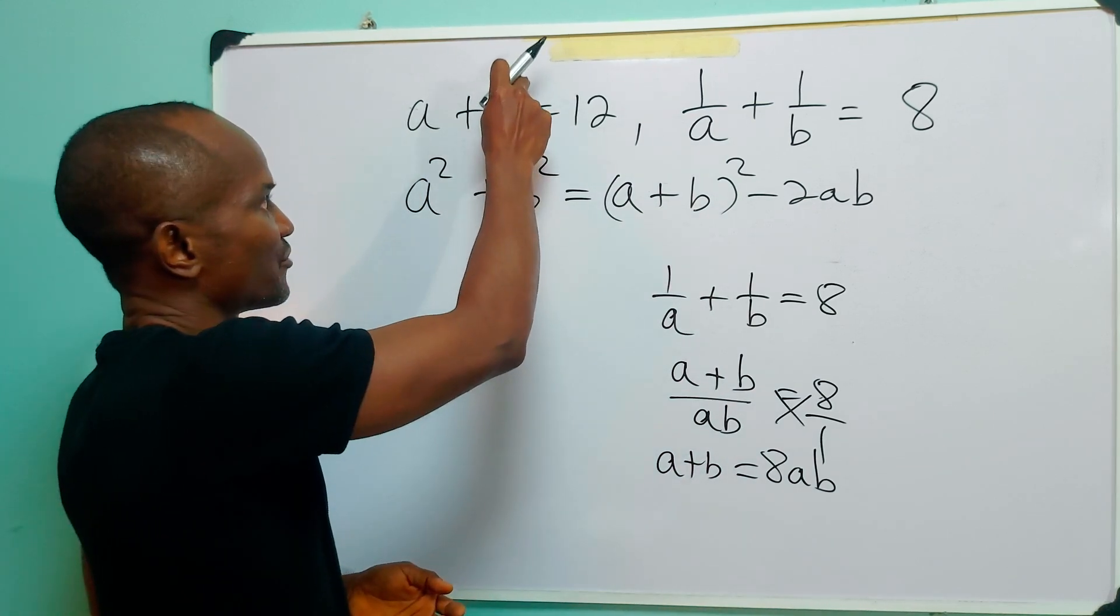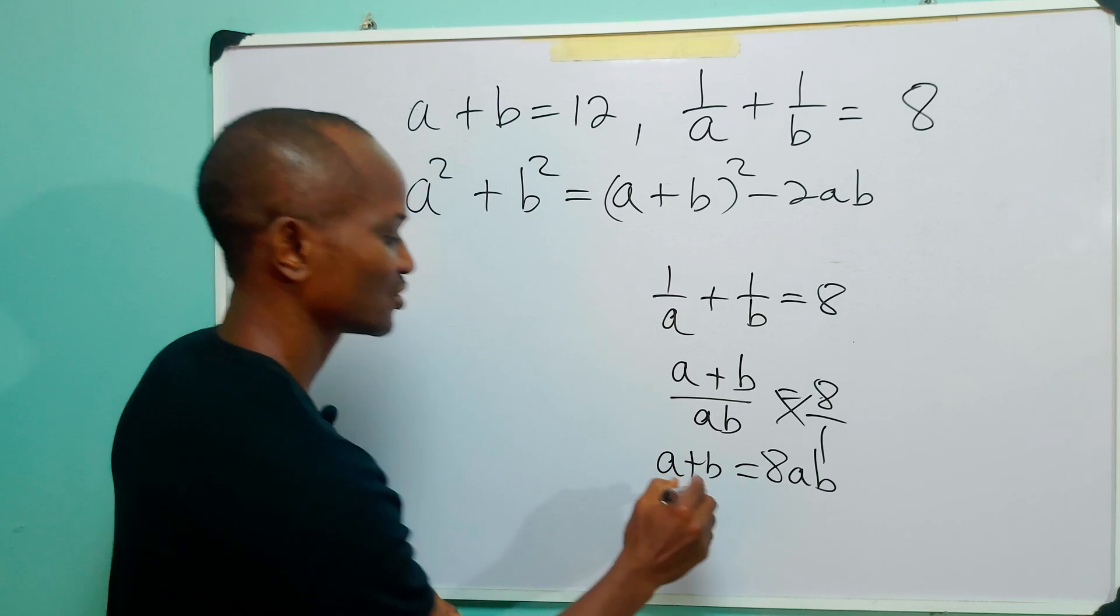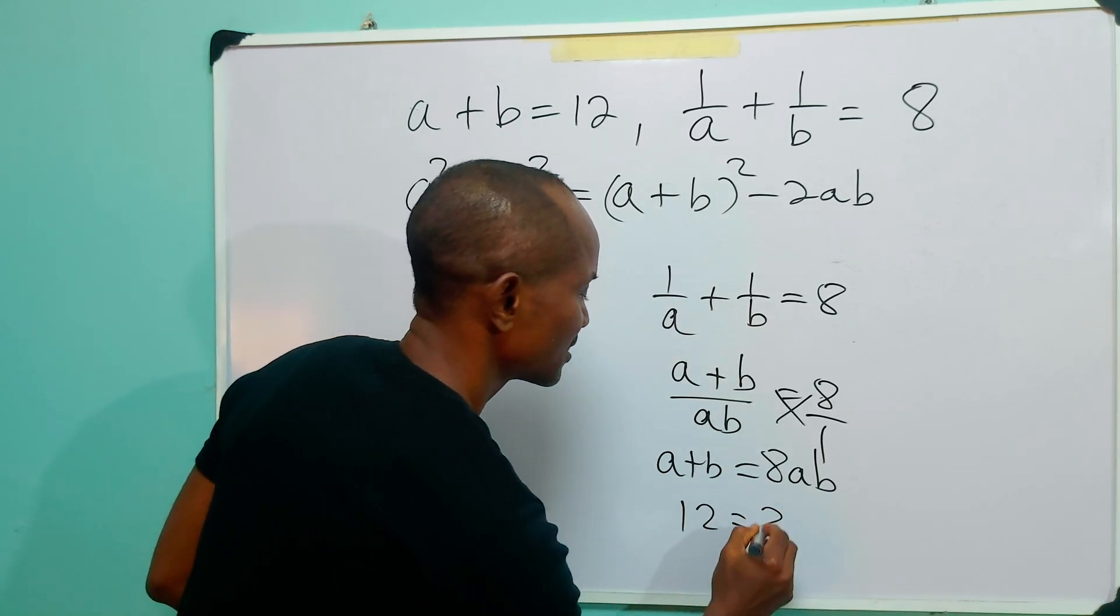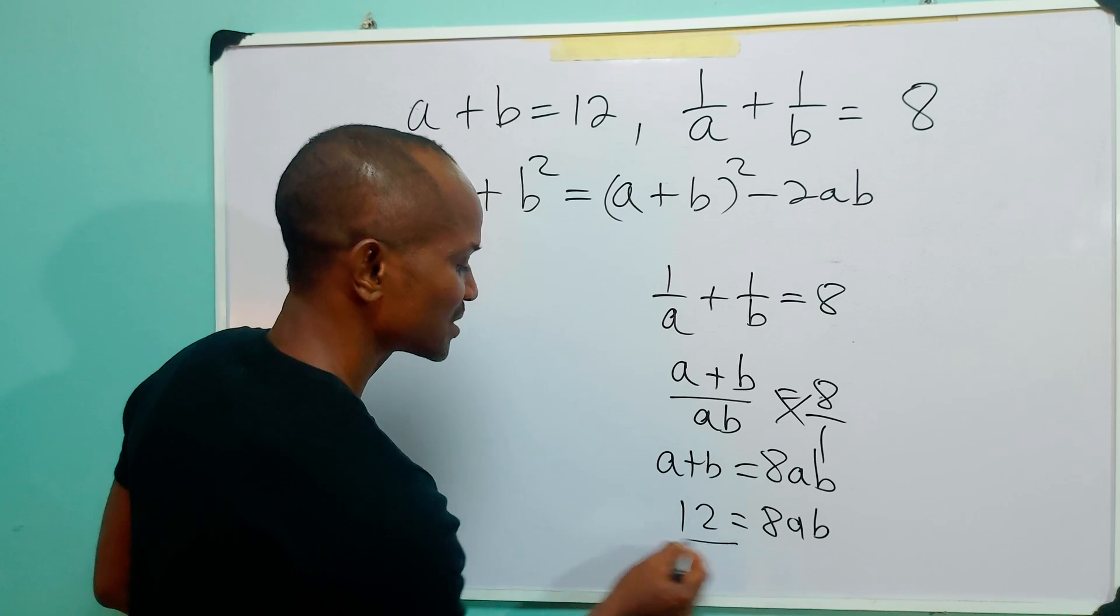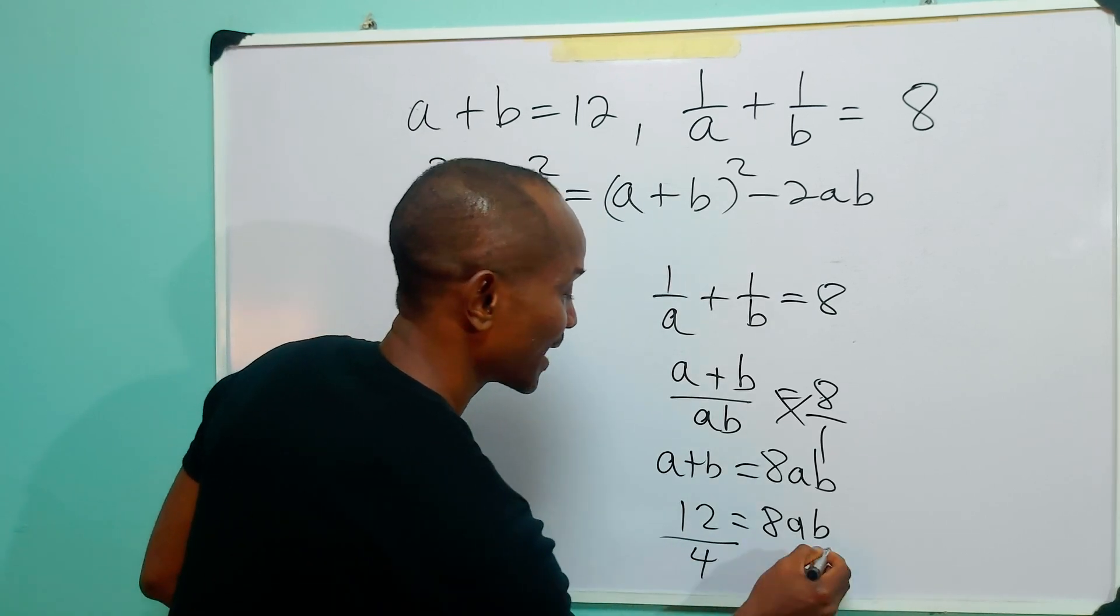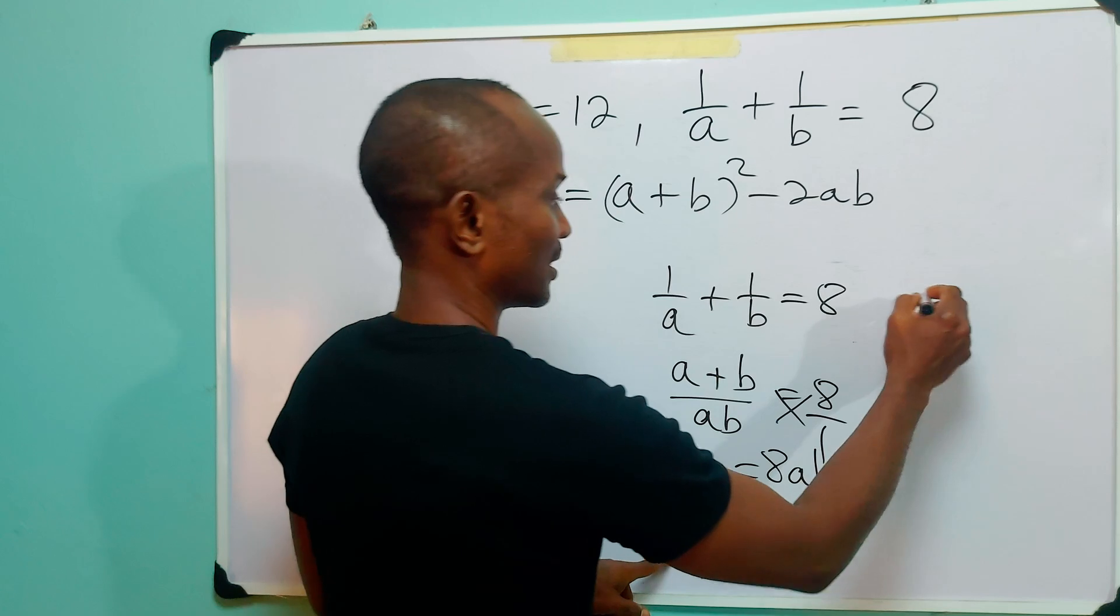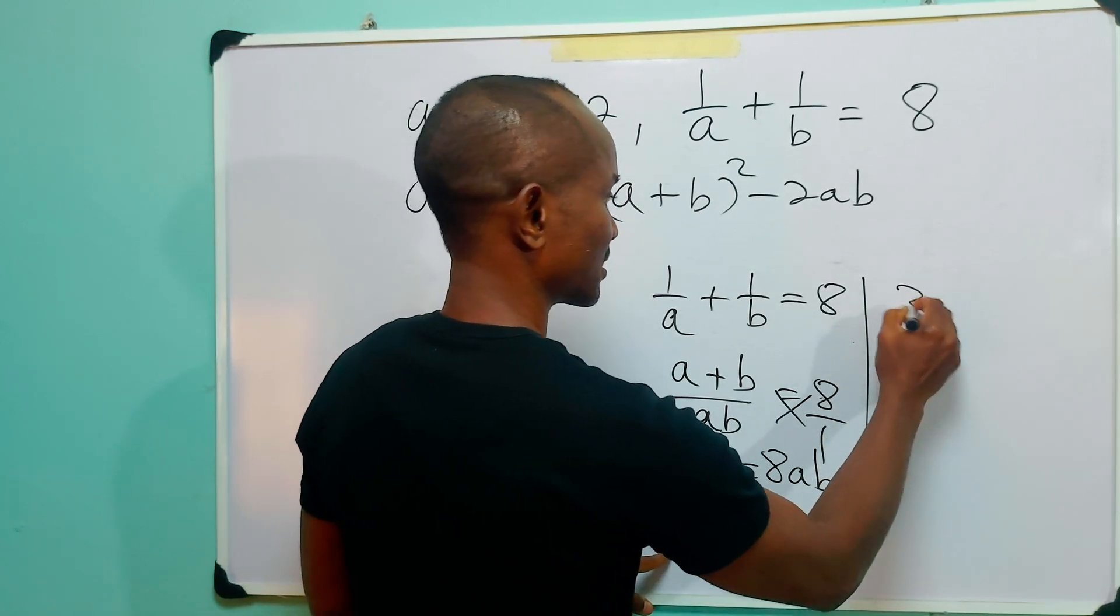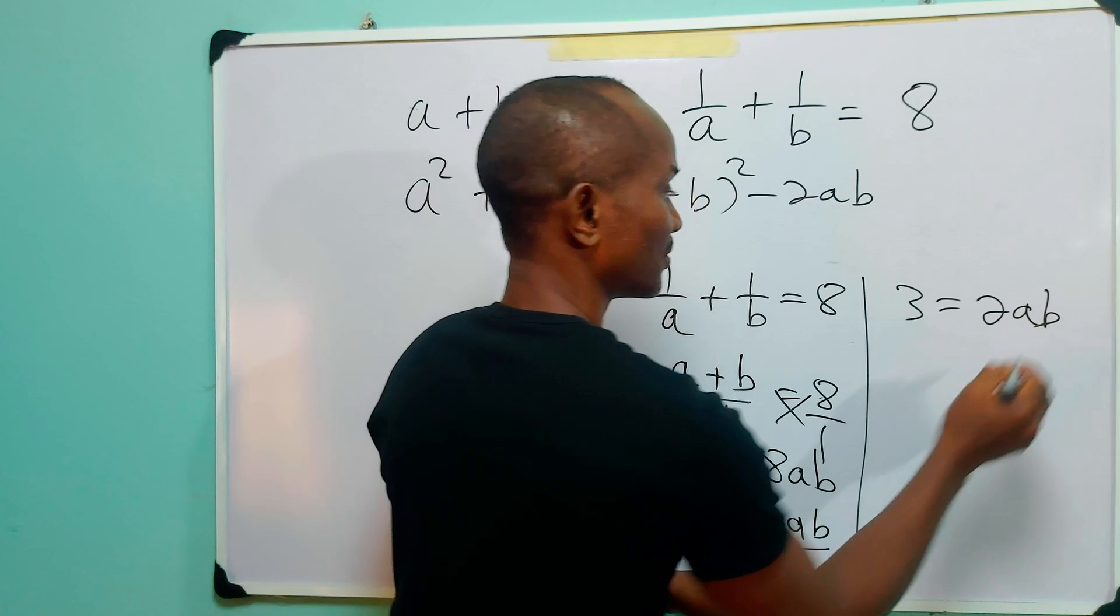But we remember that we were told that A plus B is equal to 12. So we have that 12 is equal to 8AB. Now we divide both sides of this equation by 4, giving us that 12 divided by 4 is 3, which is equal to 2AB.